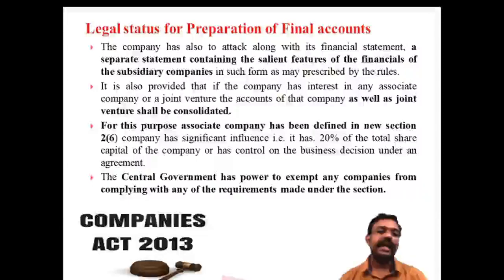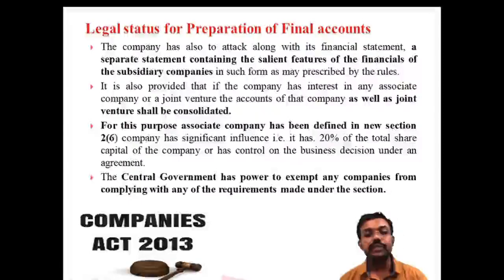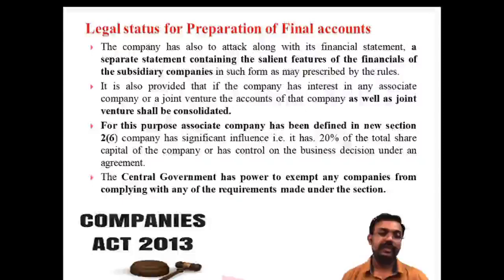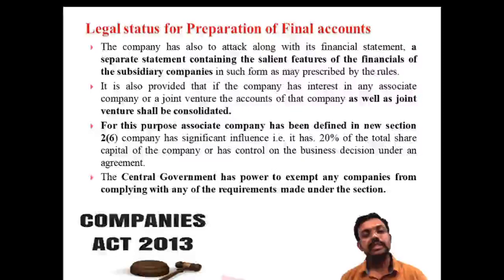For this purpose, associate company has been defined in Section 26. An associate company is one where the company has significant influence — that is, it has at least 20 percent of the total shares of the company or has control over the business decisions under an agreement. The company has significant influence over the other company through 20 percent or more of total shares.